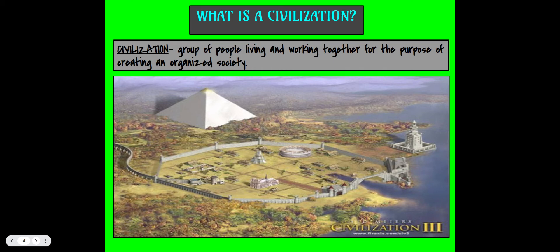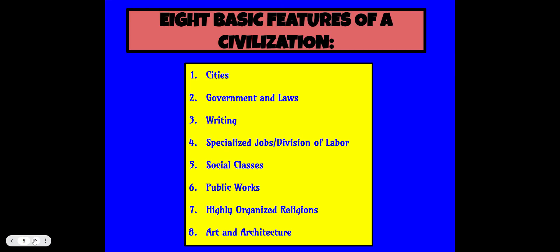So first off, what is a civilization? It's a group of people living and working together for the purpose of creating an organized society. The eight basic features of a civilization are as follows: cities, government and laws, writing, specialized jobs or division of labor, social classes, public works, highly organized religions, and art and architecture. It's really important that you have all of these working systems so that your civilization can be functioning.